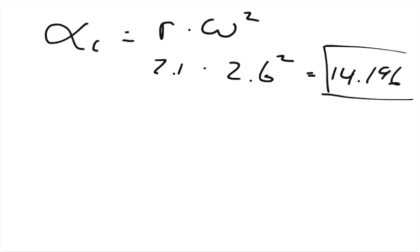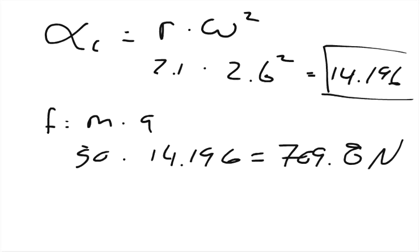In Part B, what minimum force between her feet and the floor is required to keep her on the circular path? The force equals mass times acceleration. Her mass is 50 kilograms, her acceleration is 14.196. So there's a force being exerted of 709.8 newtons.